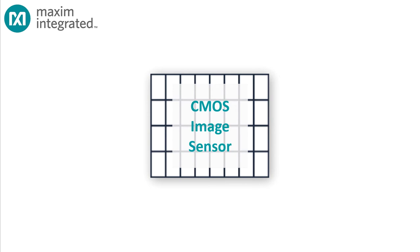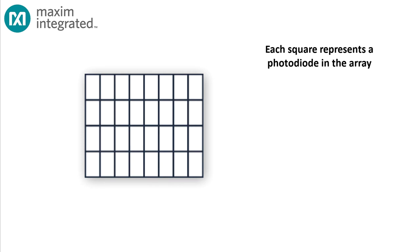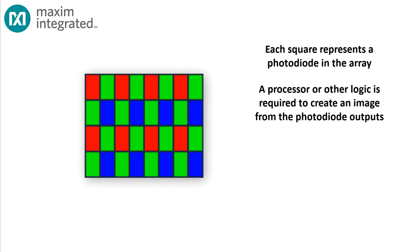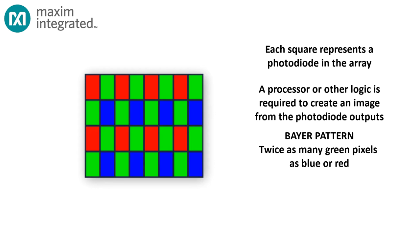In a way, modern cameras work in much the same fashion. There are photoreceptors arranged in an array that detect different wavelengths of light, and a processor is necessary to read the values from the photoreceptors and create an image based on those values. In some sensors, each photoreceptor site is associated with a color filter — red, blue, or green. The arrangement you see here is called a Bayer pattern.